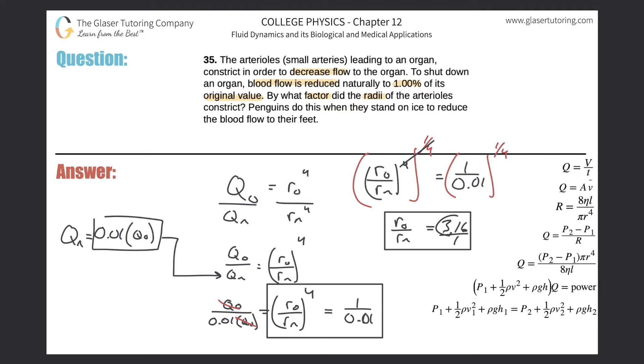So if we had to figure out now the relationship, just think: this is the old radius to the new, okay? So the old were 3.16 times larger than the new. If I wanted to find the flipped ratio, which is actually what they're really asking for, we just have to flip both sides. So if we flip this side, we got to flip this side. In other words, rn over ro is equal to 1 over 3.16.